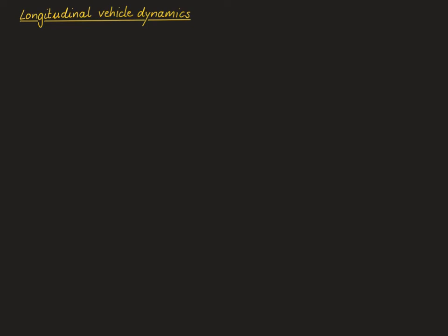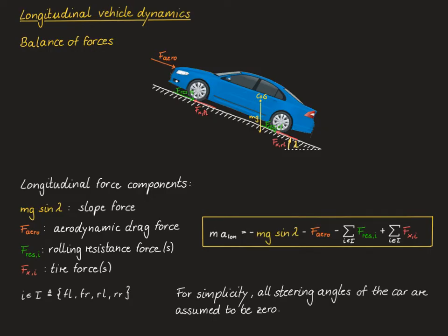In the last two videos we have looked at how propulsive power is supplied to the vehicle by its powertrain. In order to understand the dynamics of a vehicle, it is also important to have some idea about the components that are built into it. In this video we will return to the actual dynamics of the vehicle in its longitudinal direction. For a first overview, let's look at the balance of forces in the longitudinal direction of the car.